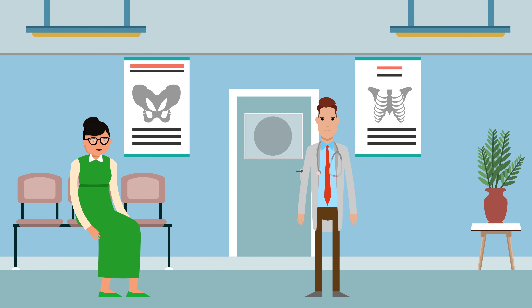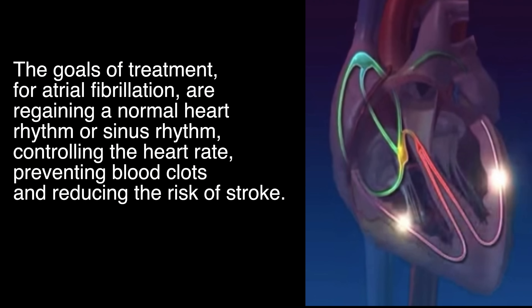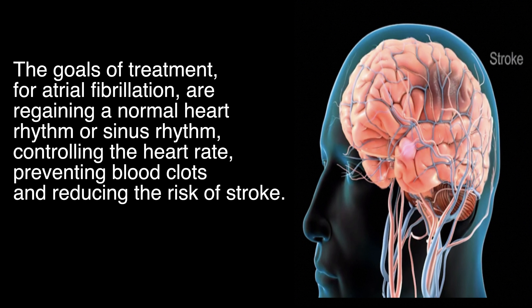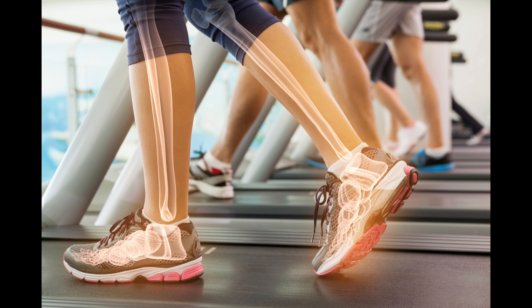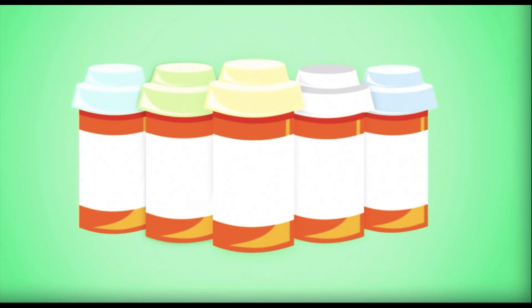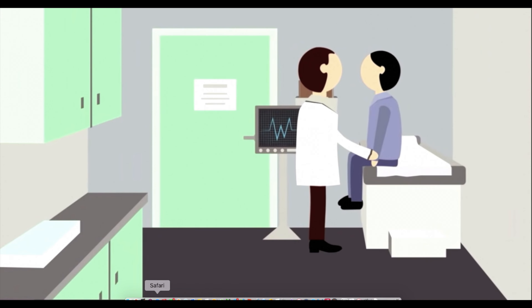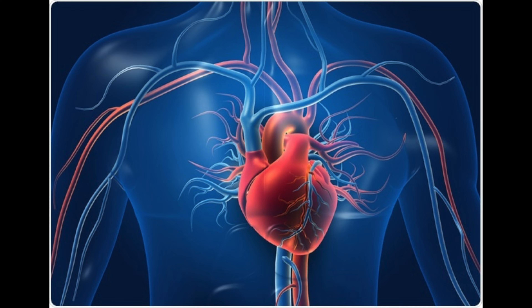The goals of treatment for atrial fibrillation are regaining a normal heart rhythm or sinus rhythm, controlling the heart rate, preventing blood clots, and reducing the risk of stroke. Many options are available to treat atrial fibrillation, including lifestyle changes, medications, catheter-based procedures, and surgery. The type of treatment recommended is based on your heart rhythm and symptoms.